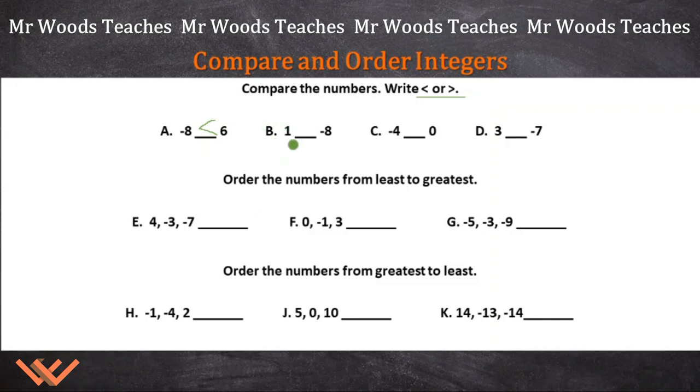Let's evaluate this here. We have B, which is 1, blank, negative 8. Well, is 1 greater than negative 8? Yes, because again, negative 8 is less than 0, and 1 is greater than 0. So we have that greater than symbol here. C, negative 4 is on the left-hand side, so it's less than 0. So therefore, 0 is greater than, so we're going to draw this like this. See how that 0 is greater than negative 4?